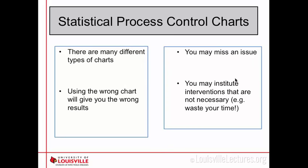There are many different types of SPC charts — what we showed you was called a P chart, based on the percentage or infection rate. Using the wrong chart can give you the wrong results; if you use a time-between-events chart for something very common, you may have too many data points. It's also possible to miss issues or institute unnecessary interventions. Rare events do happen, and if you investigate and find no clear cause, it could just be a random spike.